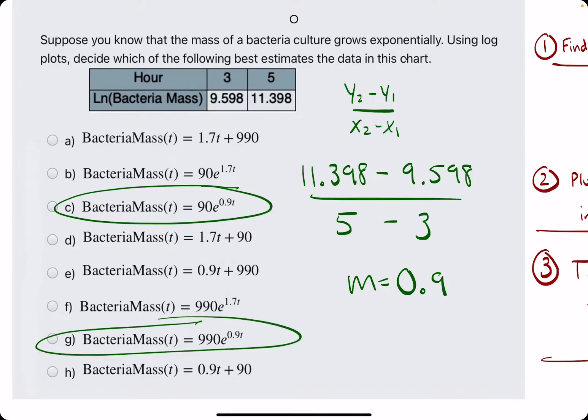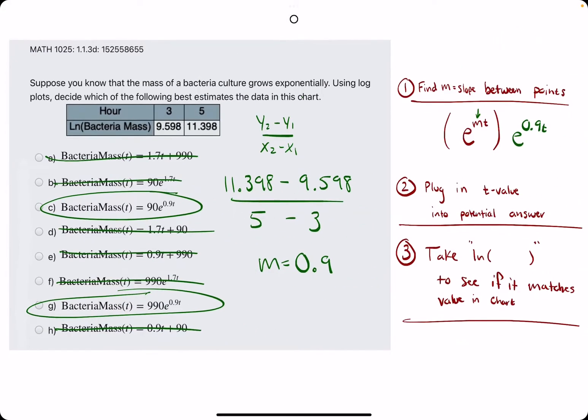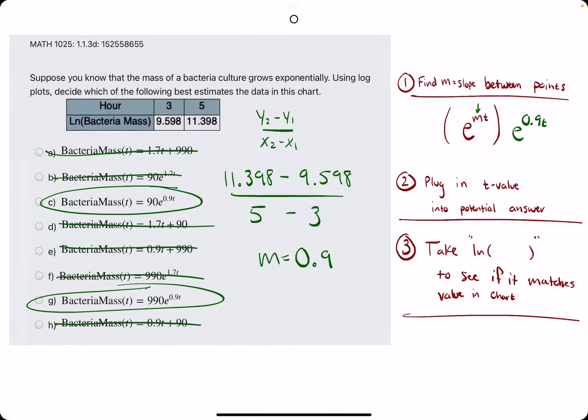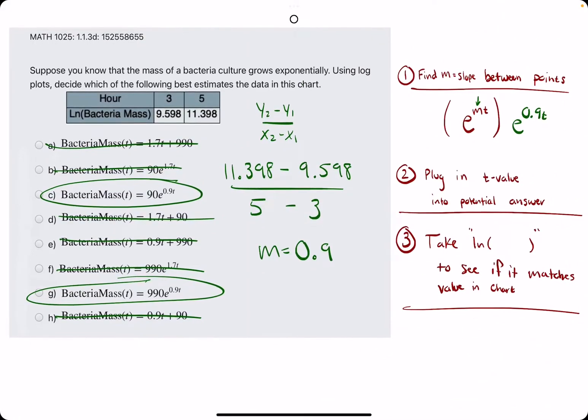So we're looking for either option C or option G. We can immediately eliminate all other options because we are looking for something of the form e to the 0.9t.